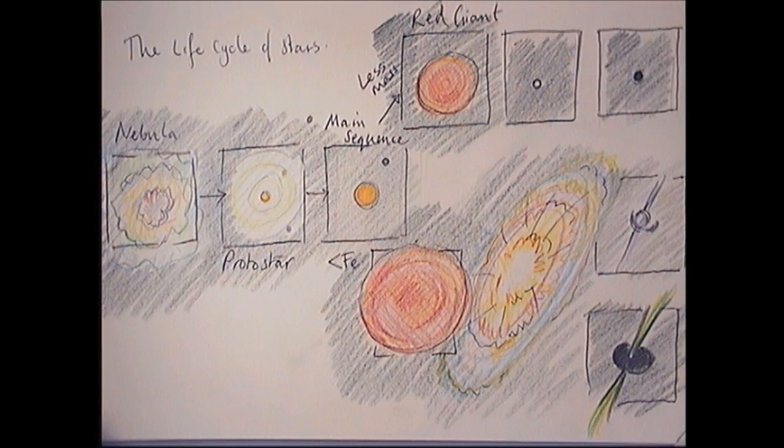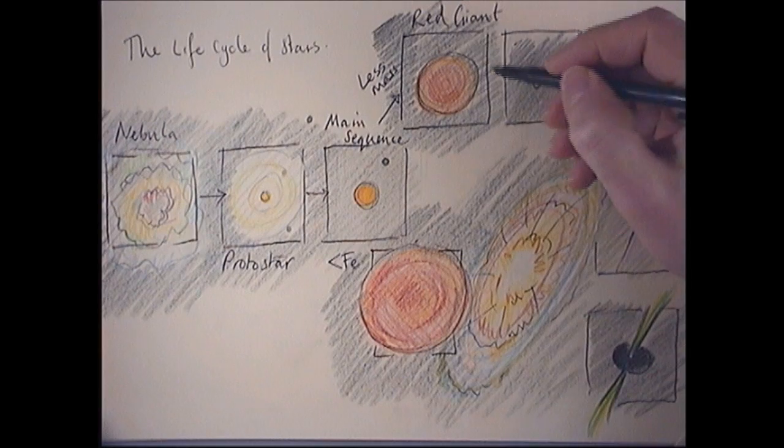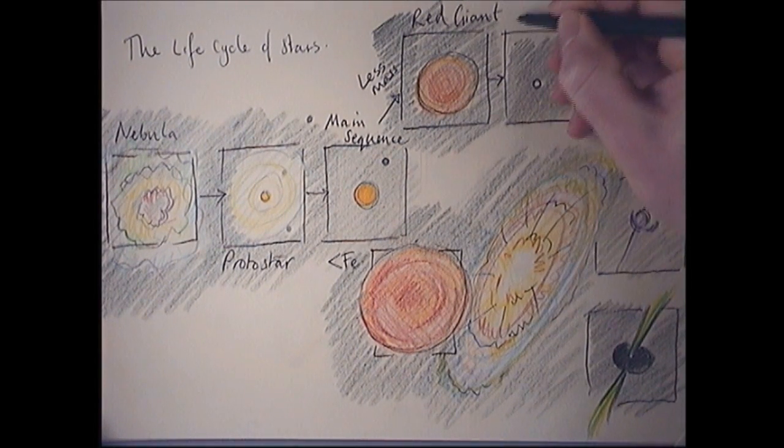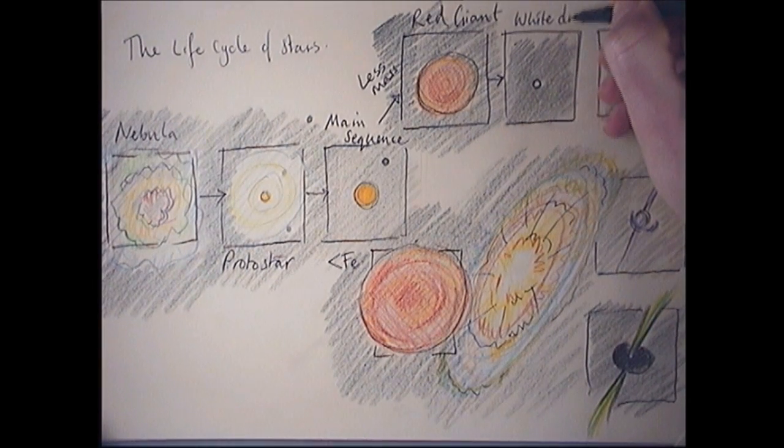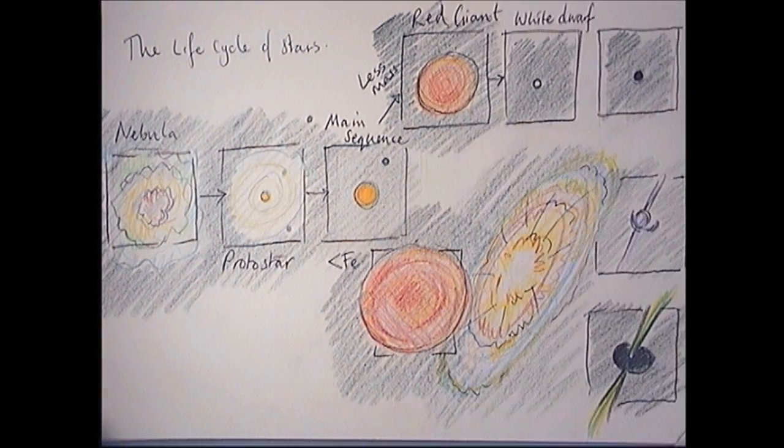And eventually all the fusion stops and gravity is not enough to bring it together. And the elements that have been made in that star just drift out into space. And what will be left over is a small dense object called a white dwarf.